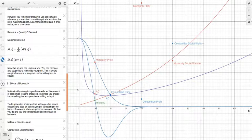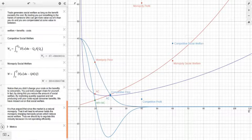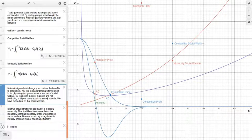So we're going to set the price at that output on the demand curve. Now we should also notice that by doing this, you've reduced the amount of economics lessons produced. The more you charge for something, the less people are willing to buy it. This is the downward sloping demand curve. The more produced, the lower people are willing to pay. Remember that trade generates social welfare as long as the benefits exceed the cost. By trading, you put something in the hands of someone who can get more value out of it than you do, and you are compensated at some value in between. And by doing it, now the buyer has something which is more valuable, and they possess it. So we've created value, we've created this social welfare. Right here, we have our blue dot here, which is the competitive social welfare. And then over here, we have a red dot, which is the monopoly social welfare. Notice that you didn't change your costs or the benefits to the consumer. You just took a larger share for yourself. In fact, by doing this, you reduce the amount of social welfare. By restricting the quantity supplied, and not producing until your costs equal the consumer's benefits, we have missed out on that social welfare, those gains from trade.